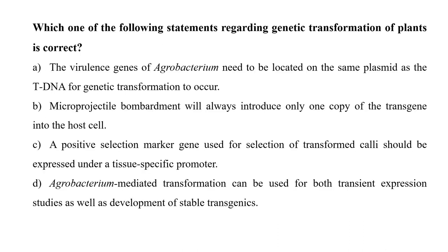The next question is: which statement regarding genetic transformation of plants is correct? Statement D — that Agrobacterium-mediated transformation can be used for both transient expression studies as well as development of stable transgenics — is correct. This is because Agrobacterial infection of plant tissues can occur in either a transient or stable manner. Rapid transient expression predominantly occurs from T-DNA copies not integrated into the host genome but exhibiting high expression levels, while stable transformation normally requires several months to obtain the first generation of transformed plants. So our correct option is D.